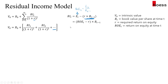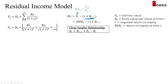To find the book value at time t, we use the clean surplus relationship: the book value at time t equals the previous period's book value per share, plus earnings per share for period t, minus the dividend per share at period t.